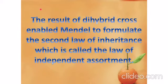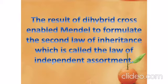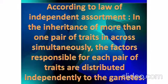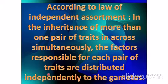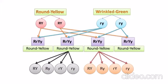The result of the dihybrid cross enabled Mendel to formulate the second law of inheritance, which is called the Law of Independent Assortment. Mendel postulated that inheritance of a factor controlling a particular trait in an organism is independent of the other. According to this law, in the inheritance of more than one pair of traits simultaneously, the factors responsible for each pair of traits are distributed independently.